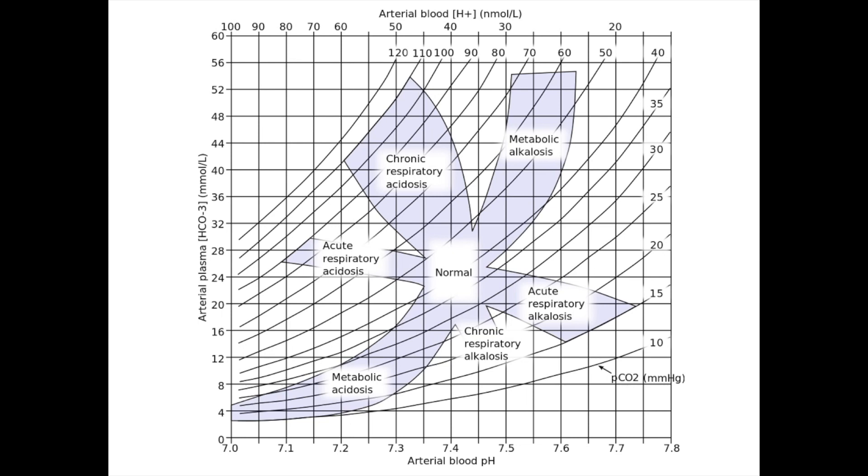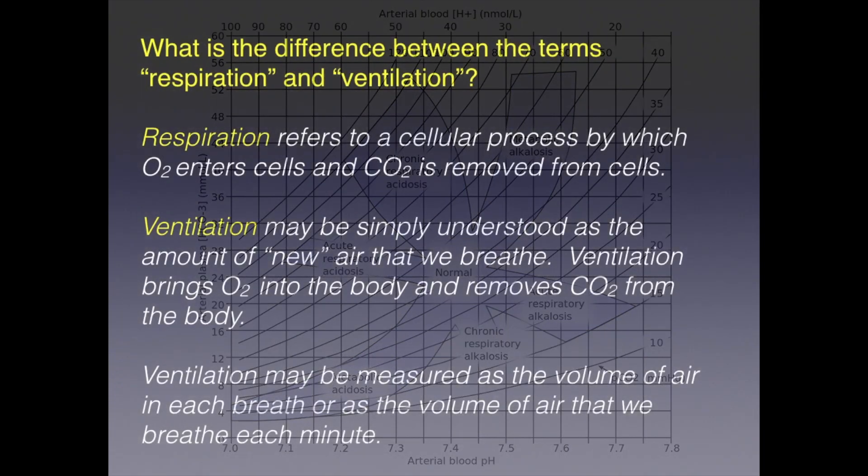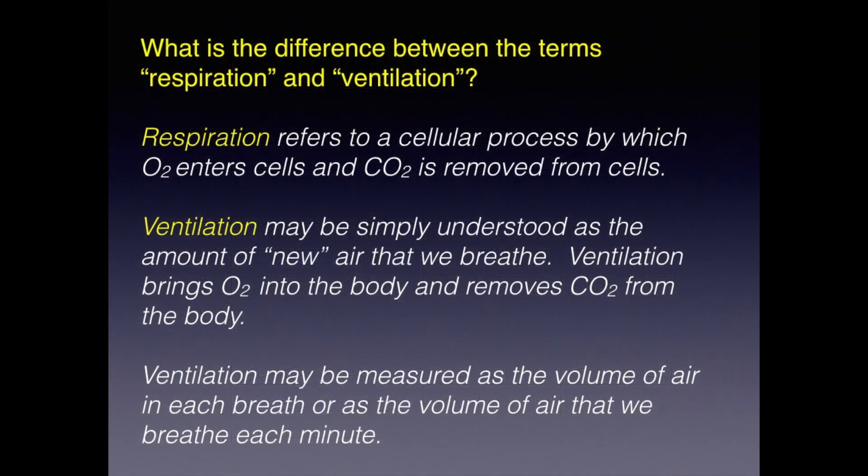This flashback to our acid-base nomogram signifies that we are ready to move on to the second portion of this lesson where we will examine the relationship between ventilation and pCO2. Let's start by considering the terms respiration and ventilation. Respiration refers to a cellular process by which oxygen enters cell and CO2 is removed from cells. Ventilation may be simply understood as the amount of new air that we breathe. Ventilation brings oxygen into the body and removes CO2 from the body. Ventilation may be measured as the volume of air in each breath or as the volume of air that we breathe each minute.